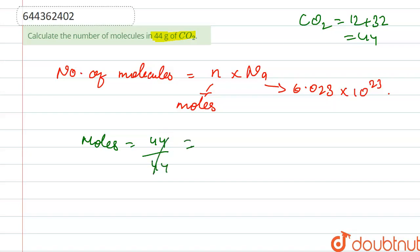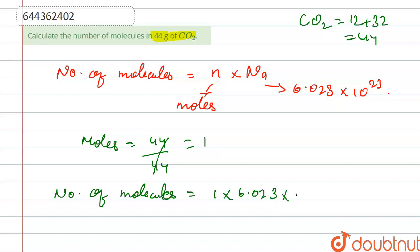Therefore, the number of molecules = 1 × 6.023 × 10²³, which equals 6.023 × 10²³ molecules.